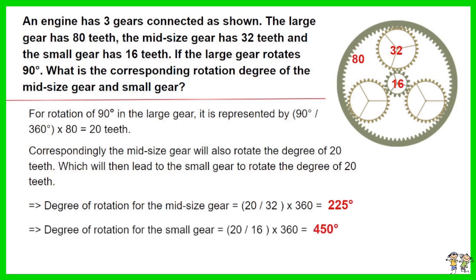The degree of rotation for the small gear equals 20 divided by 16, then times 360 degrees.